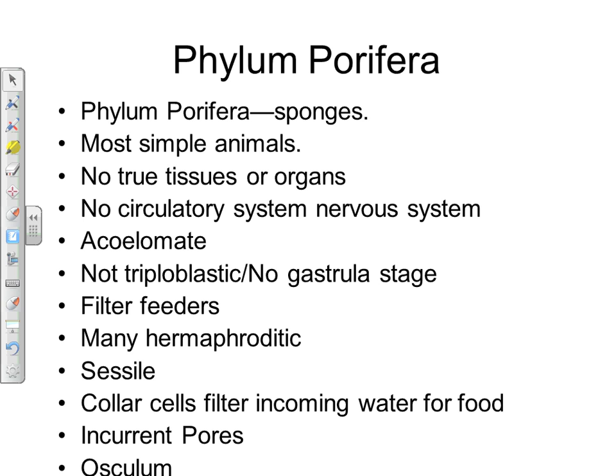We'll start with the first three phyla of animals, beginning with the simplest. The simplest animals belong to the phylum Porifera, which means 'many pores.' These animals are the sponges. They're simple in that they don't have any tissues or organs — they're simply clumps of cells. Because they lack tissues and organs, they also have no circulatory or nervous system, and are completely dependent on diffusion and osmosis to move materials around. They also lack a body cavity.